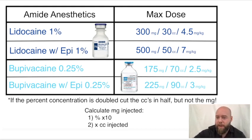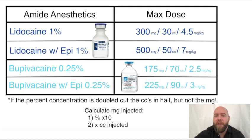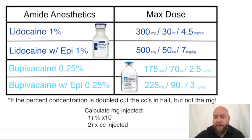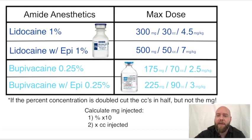They might also ask you to do a calculation: how many milligrams did you inject? It's a common question. If you injected 30 cc's of lidocaine 1%, you do the percentage times 10: 1% × 10 = 10. Then multiply by the number of cc's injected: 10 × 30 = 300. And there you go — 300 milligrams of lidocaine 1%, the max dose.